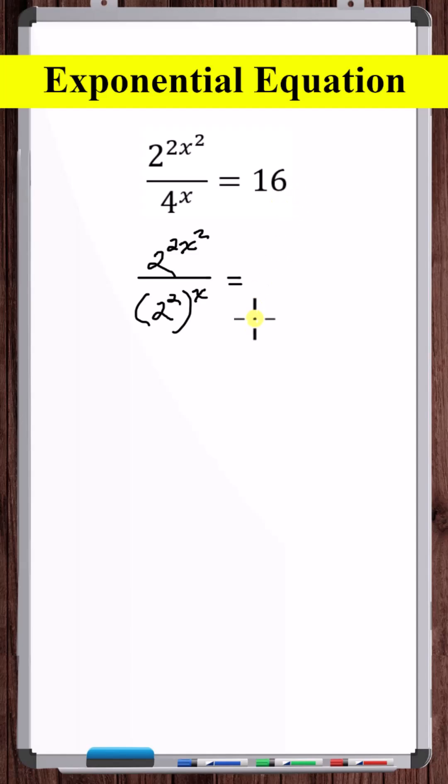So let's change 16 to 2 to the 4th power. This 2 squared to the x power, we can write as 2 to the 2x power.